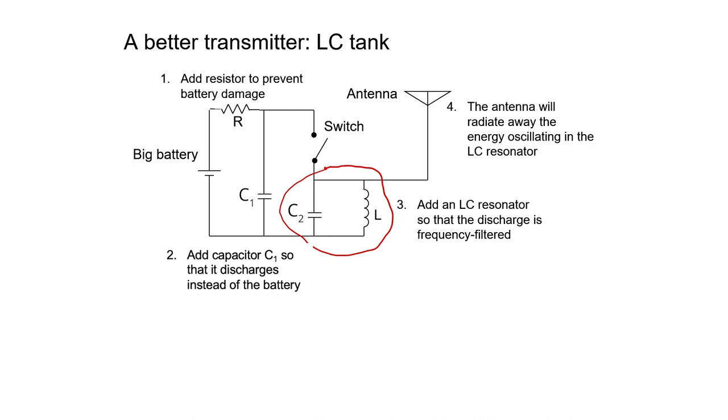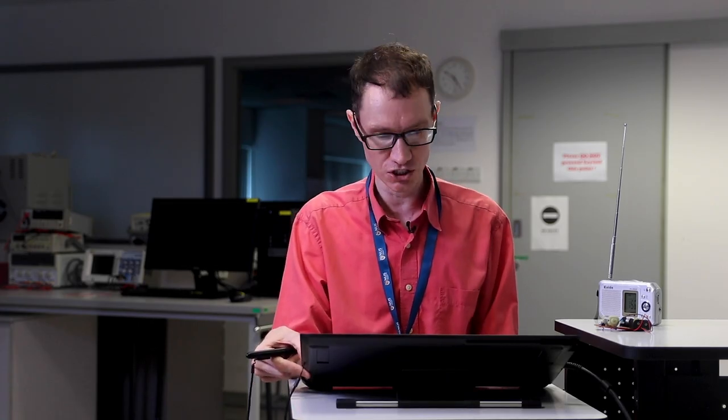When the switch is closed, capacitor C1 will now discharge. But instead of discharging directly to ground, it's going to charge capacitor C2. If I then later open the switch, then I isolate the tank circuit from the battery and capacitor C1. So how does the tank synthesize a sine wave? To do that, I'm going to do a simple derivation.